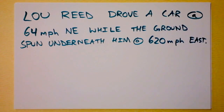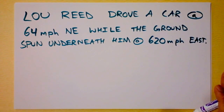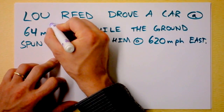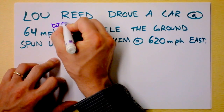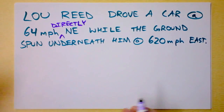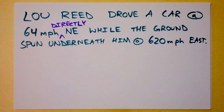Here's a problem that involves adding vectors. Lou Reed drives his car at 64 miles per hour northeast — directly northeast, meaning 45 degrees away from north and 45 degrees away from east, just splitting the difference. Meanwhile, the ground spun underneath him at 620 miles per hour east. So we're going to be considering the rotation of the earth.